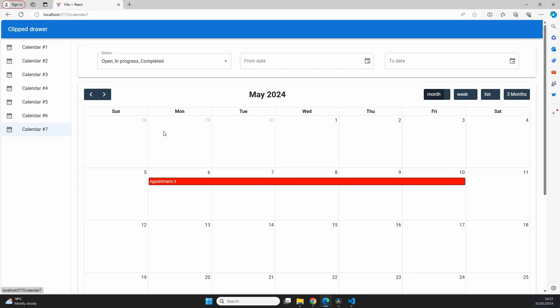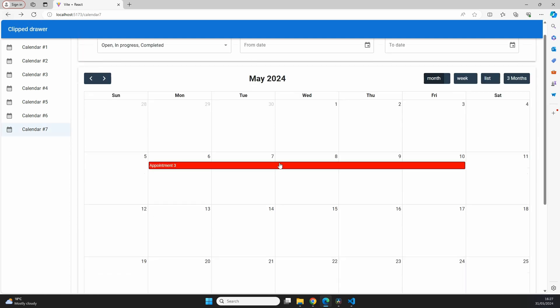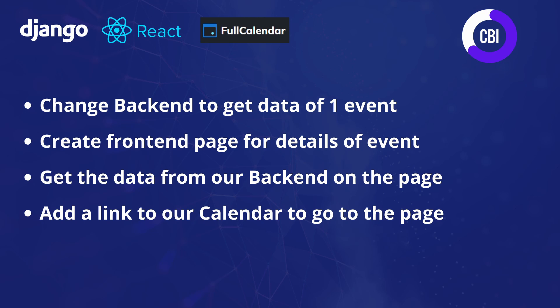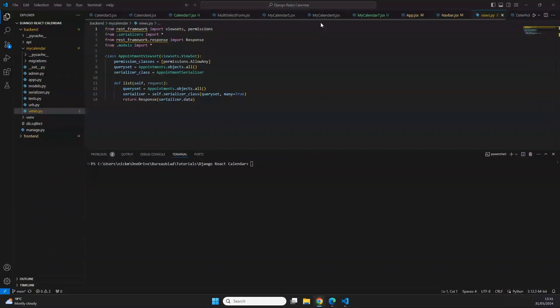In this video we're going to make sure that we can click events on our calendar, which will then take us to a page that displays details about the event. To realize this we're going to follow four steps: first, make a change to our backend to get data for one specific event; next, create a frontend page for event details; then get the data from the backend and display it; and finally add a link from our calendar to that page.